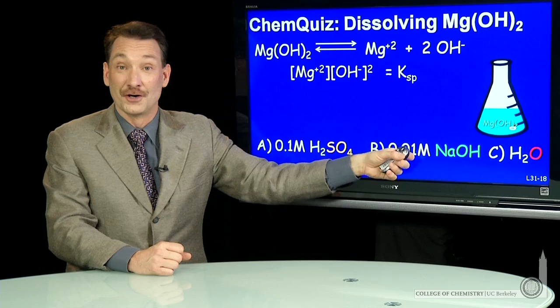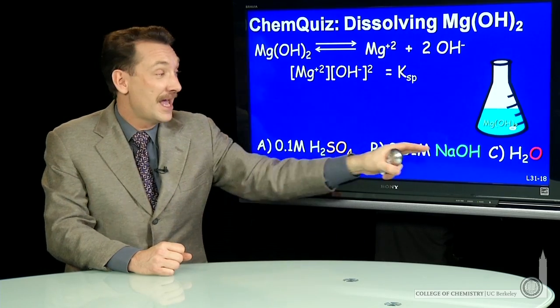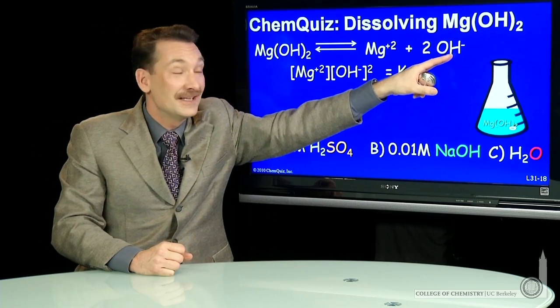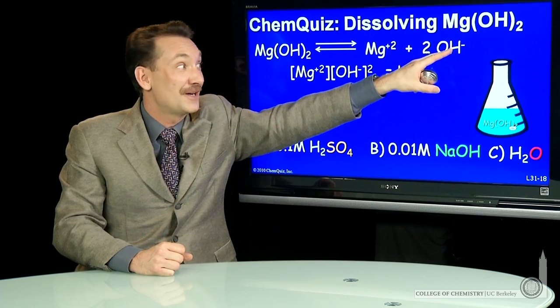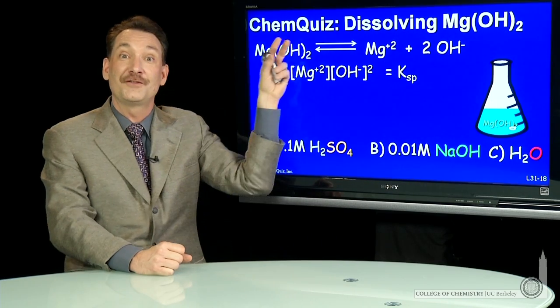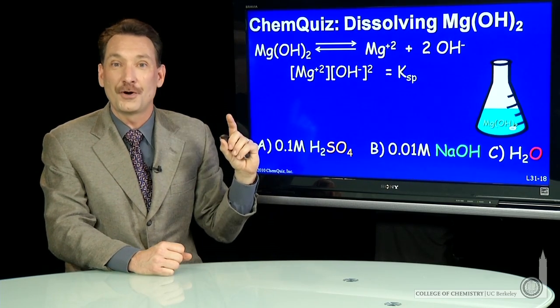Actually, the reverse occurs if you go with B. Adding NaOH, adding sodium hydroxide, adds hydroxide ions.